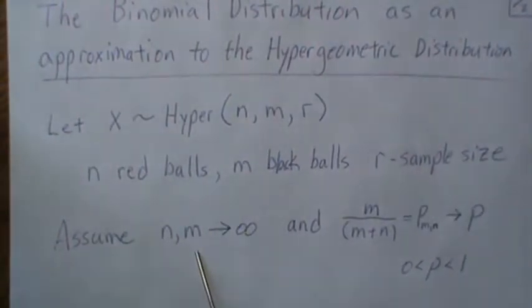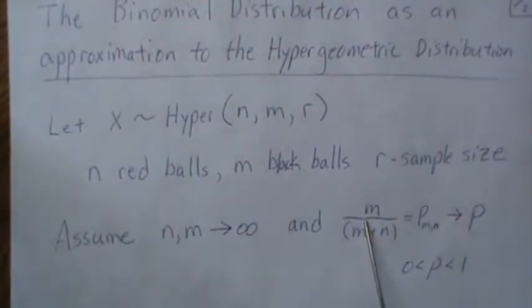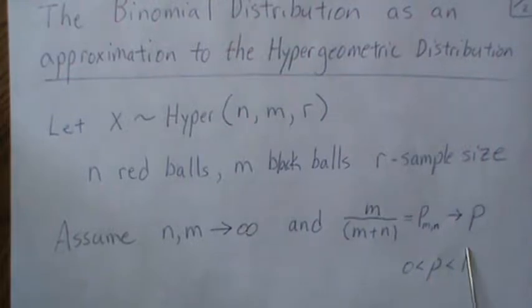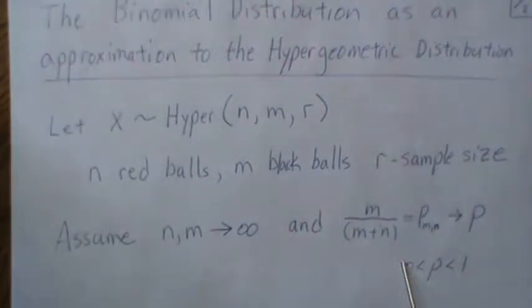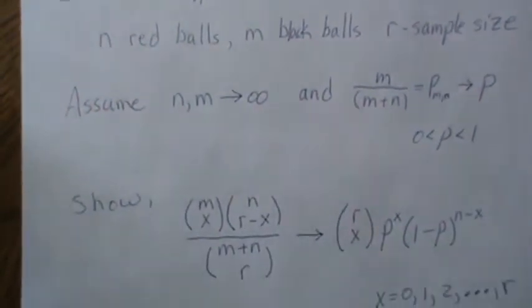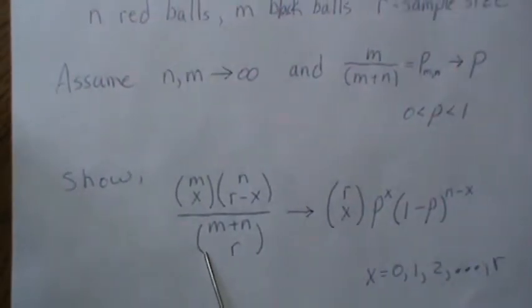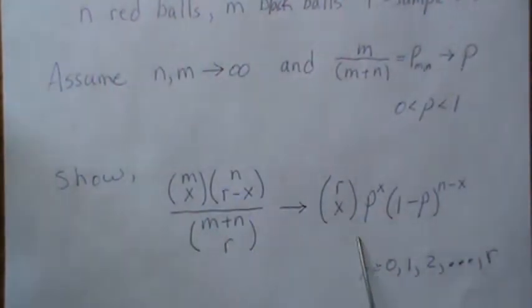Here we're going to assume as n and m go to infinity that this ratio converges to some p, and we want to show that this hypergeometric limits to a binomial distribution, and that's for x from 0 to r.